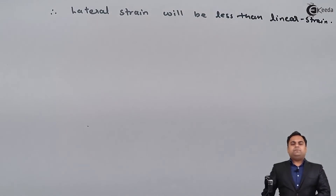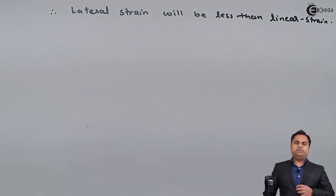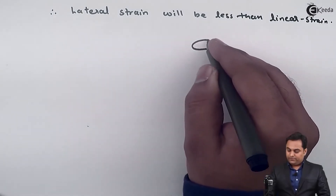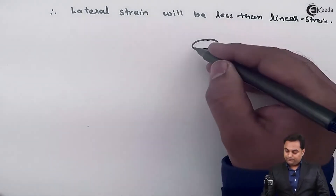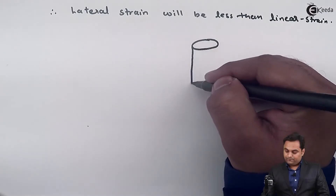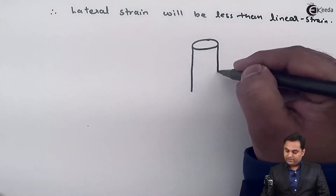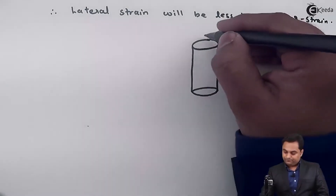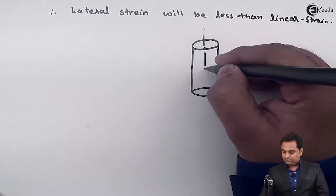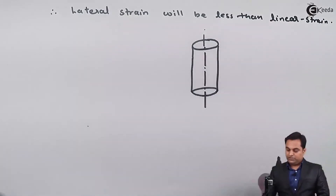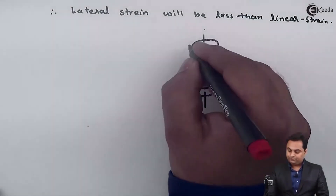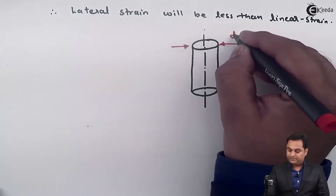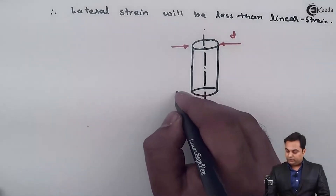Now I can explain the concept of Poisson's ratio with the help of a diagram in which we have a rod having diameter d and length l.